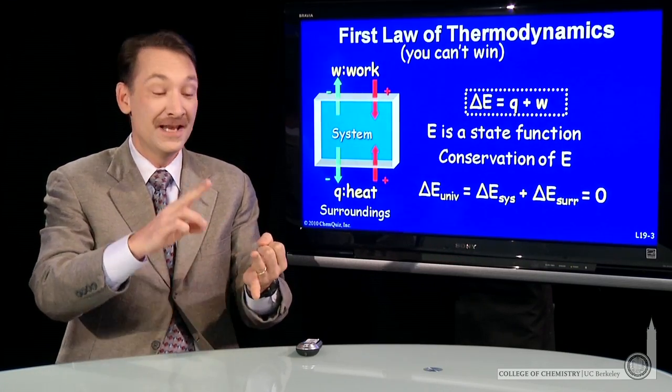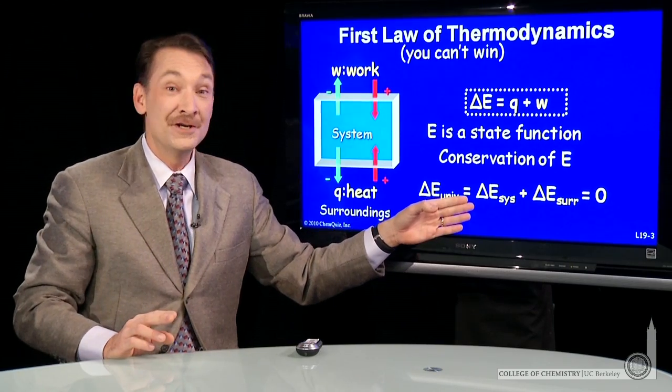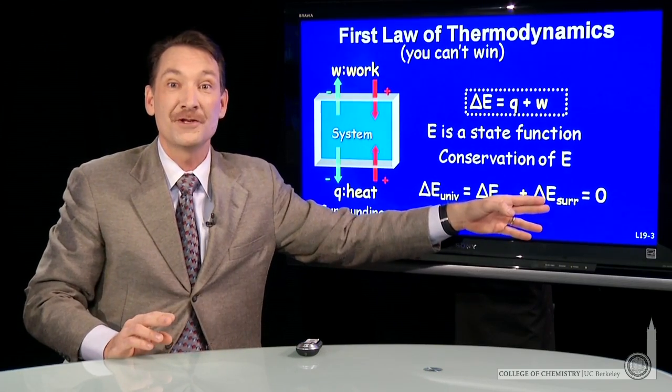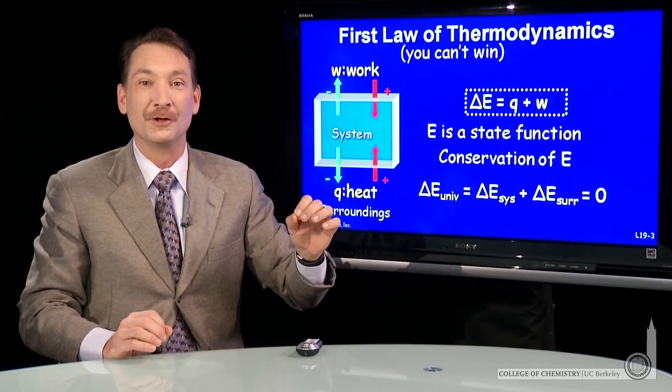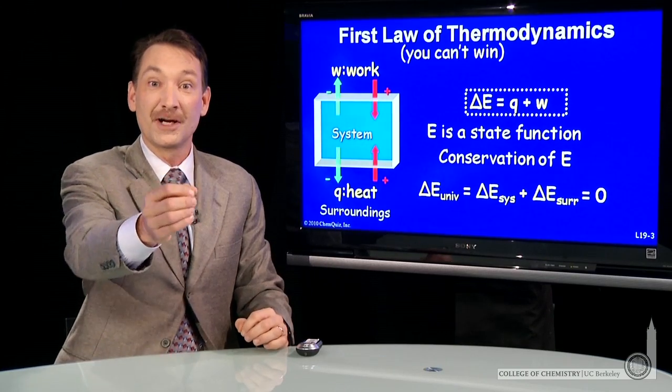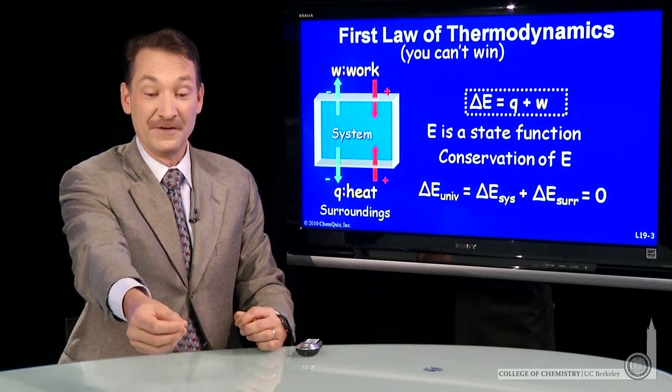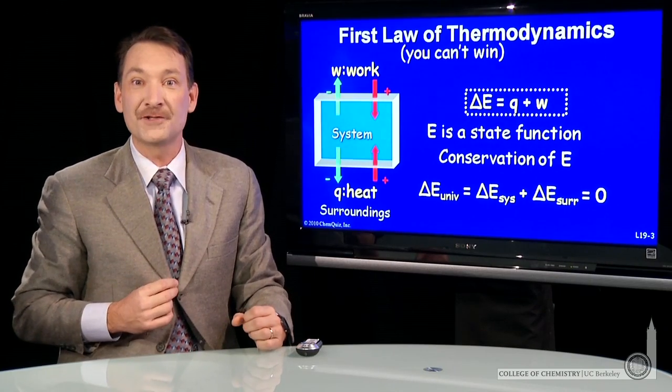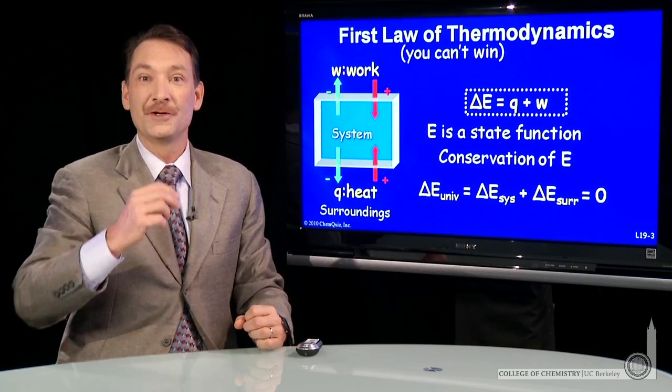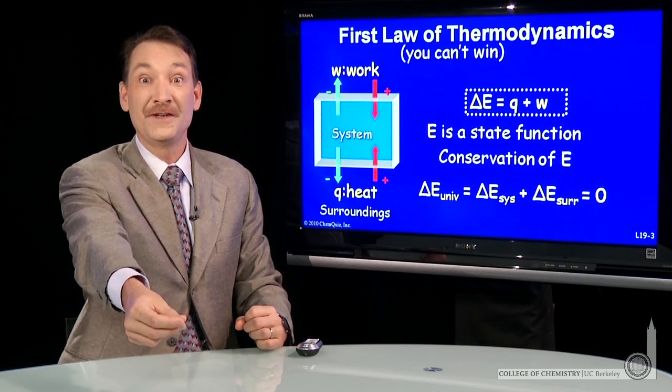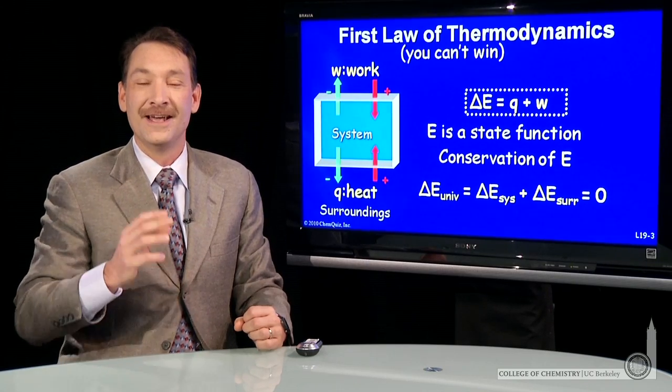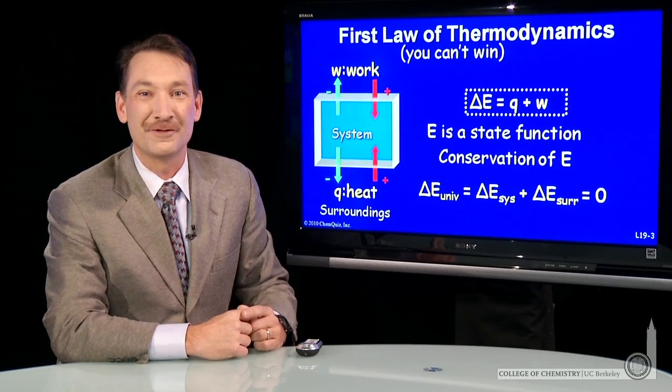Energy is a state function. It's conserved. And when energy is moved from a system to the surroundings, it's moved joule for joule. If I do a joule of work on the surroundings, I lose a joule of work. If a joule of heat is absorbed by me from the surroundings, that's joule for joule. The surroundings lose a joule of heat, I gain a joule of heat. That's the essence of the first law of thermodynamics.